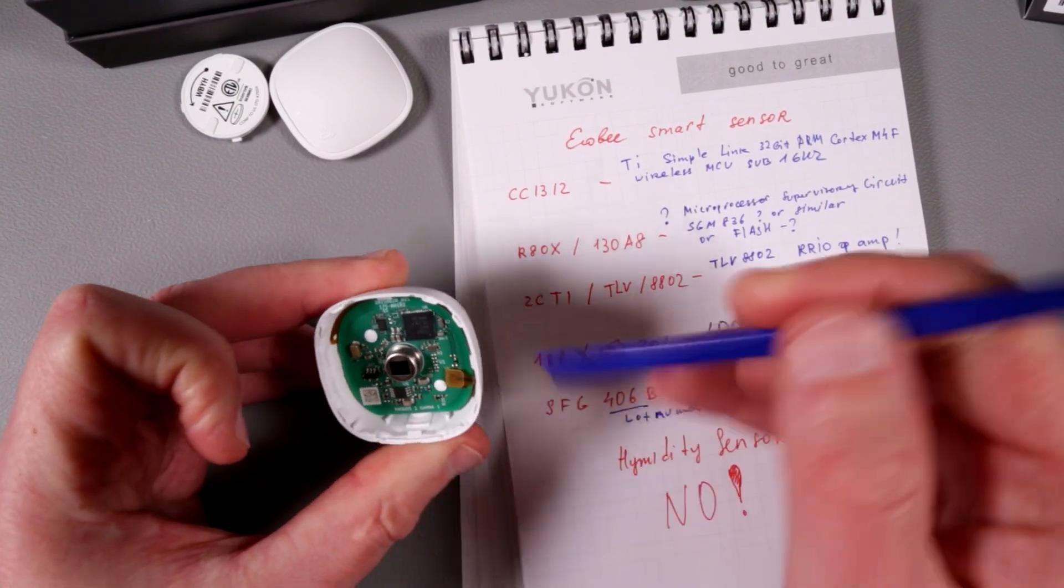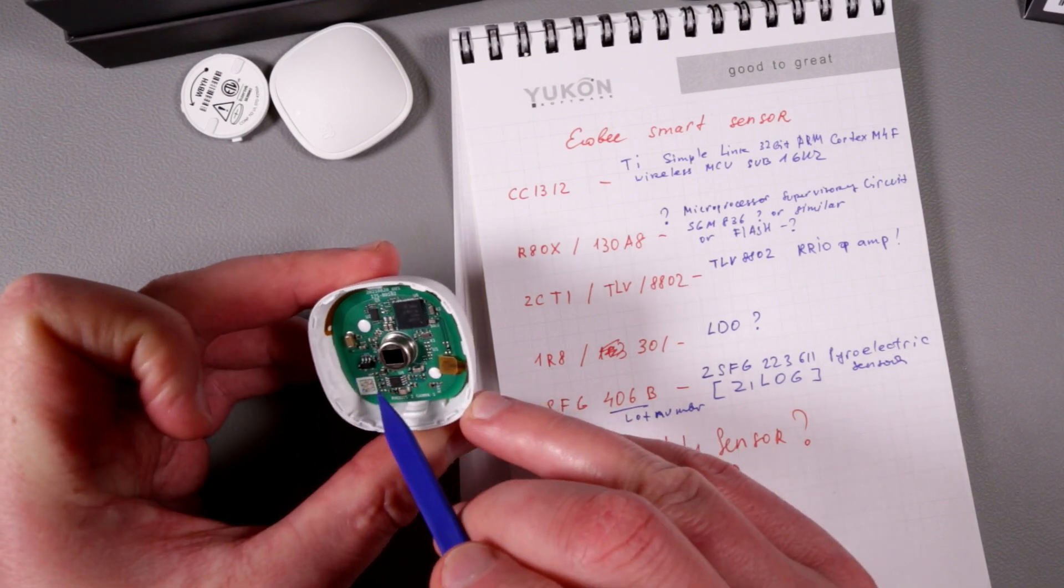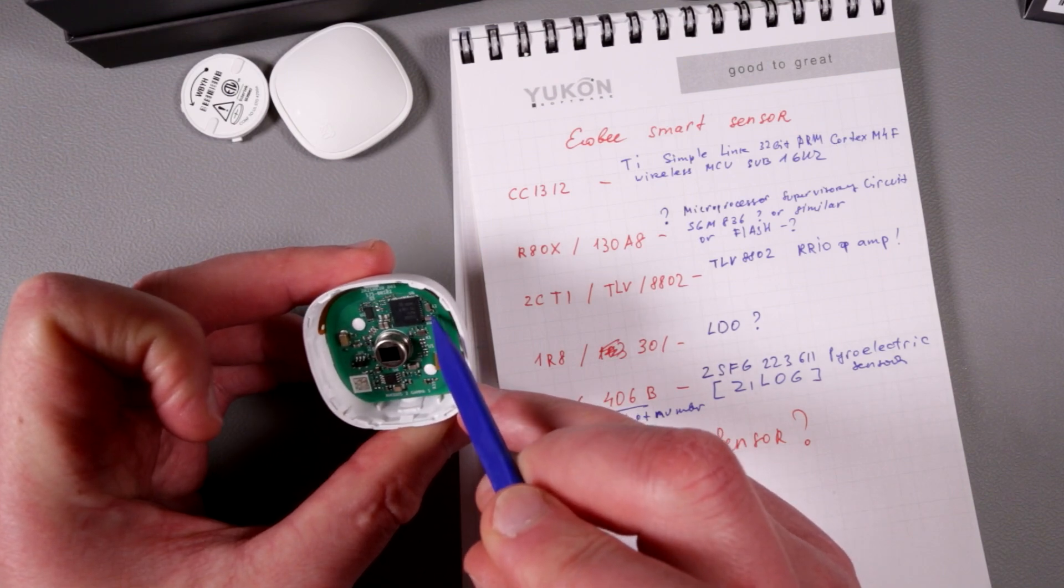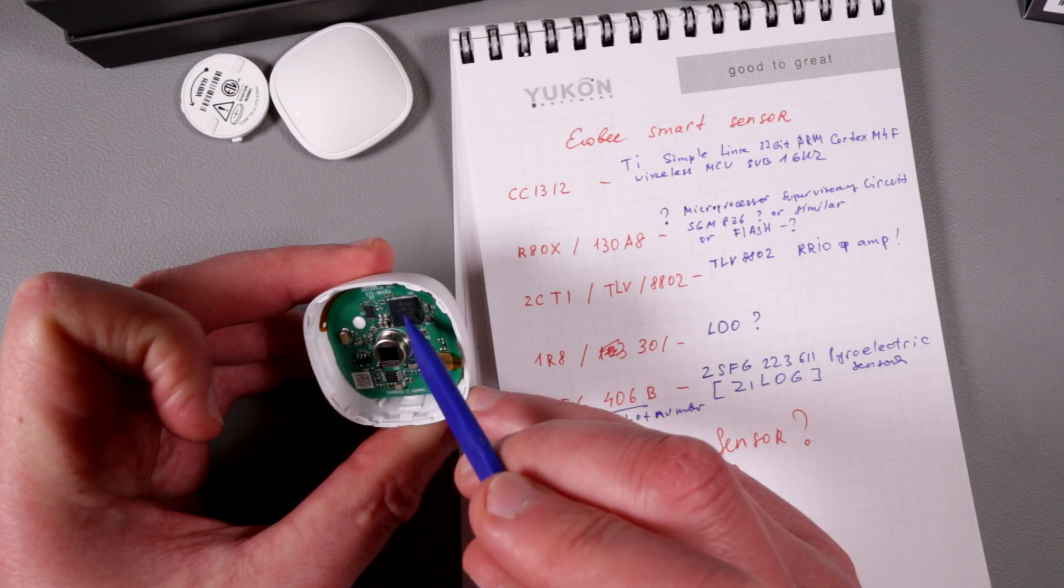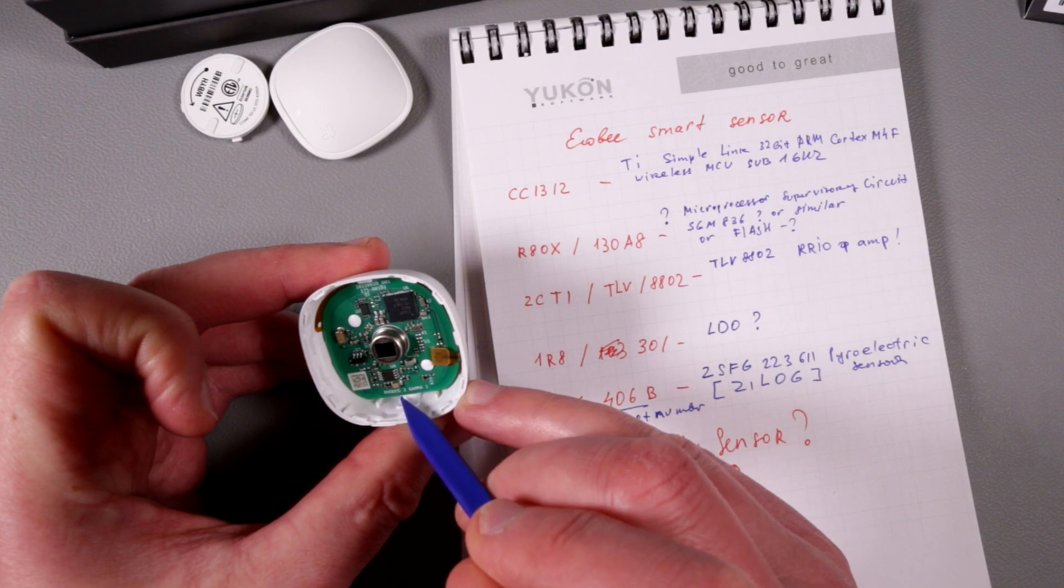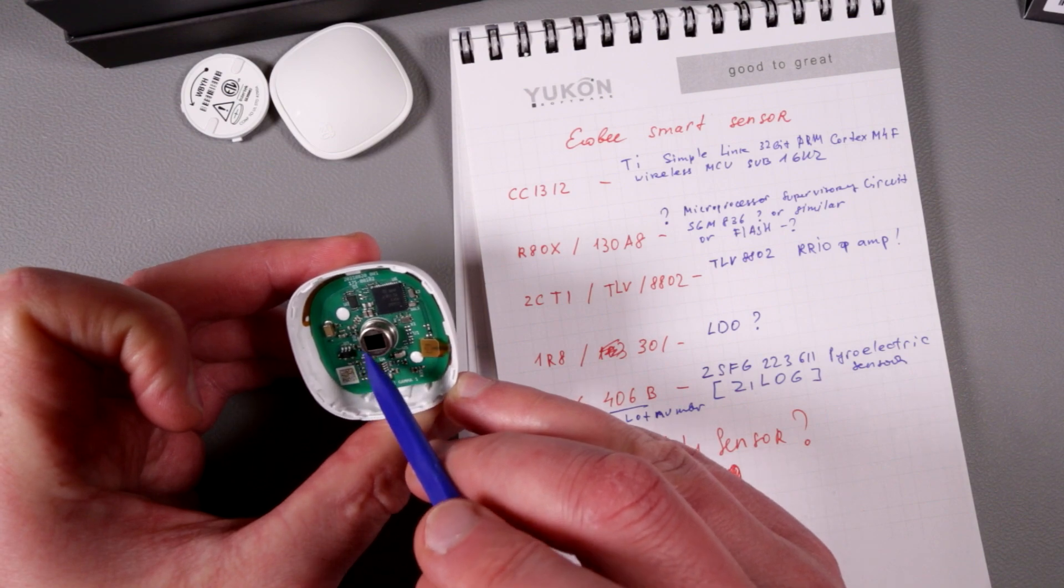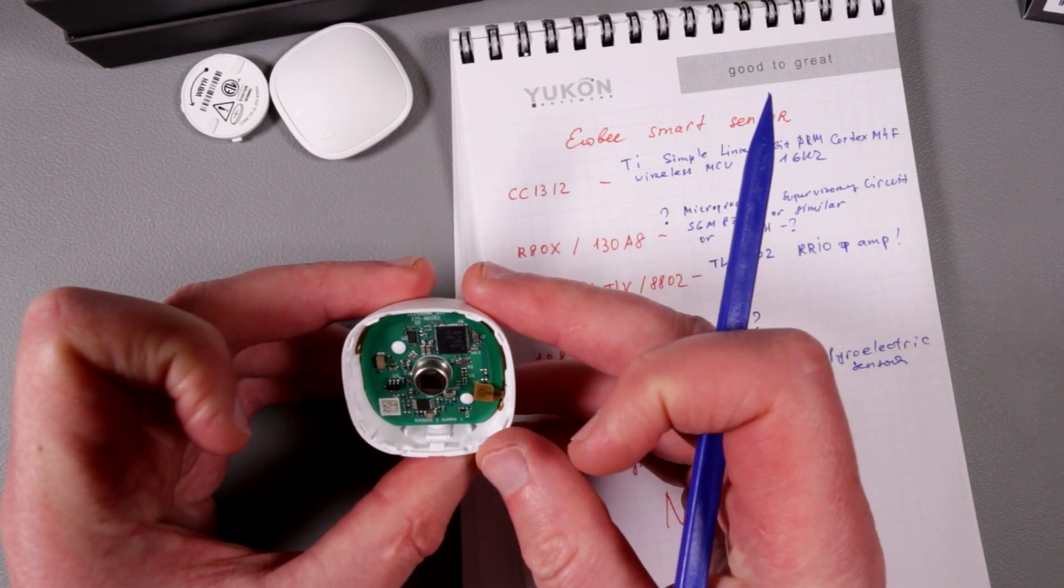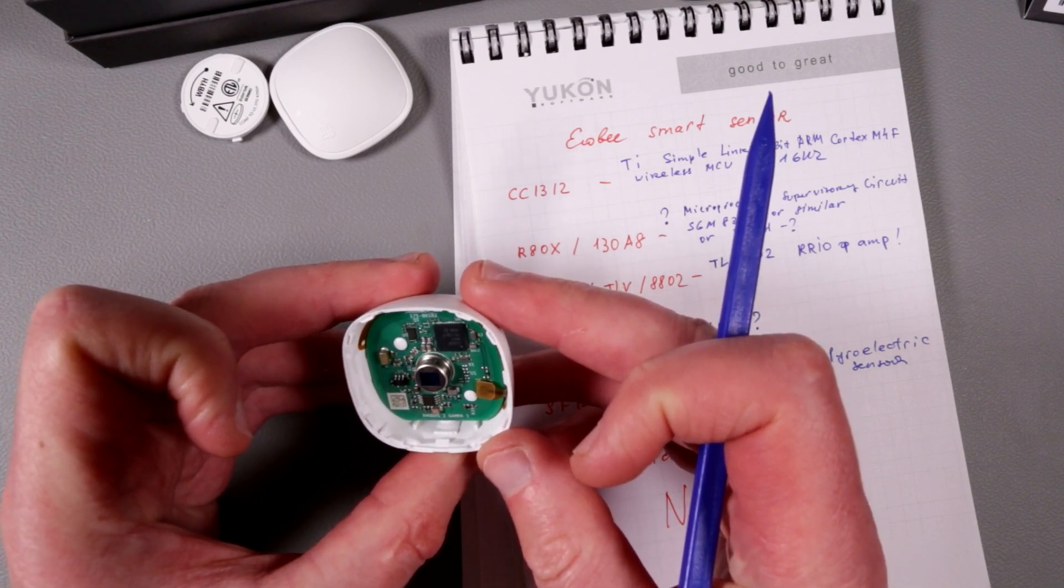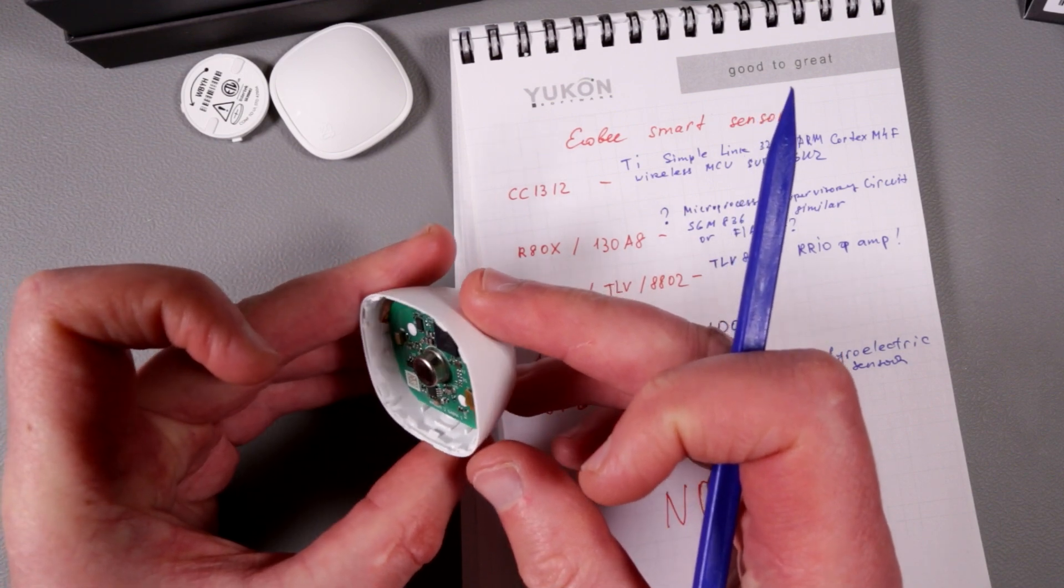I do not see any dedicated thermal sensor unless this guy is it, because I have no idea what it is, or the thermal sensor is somewhere on the back. I don't know how hard it would be. There's a transistor here, two resonators, diode. Yeah, there's not many markings on every element, so I really can't say if there is a thermal sensor here.